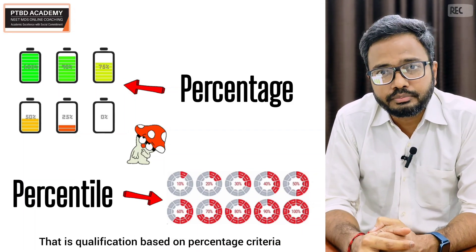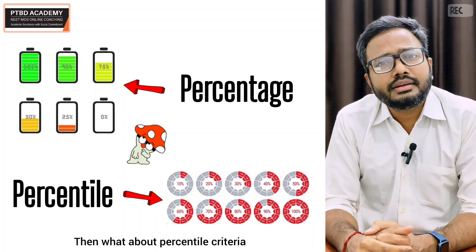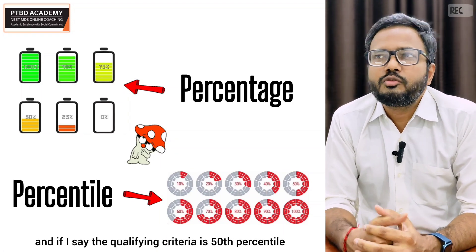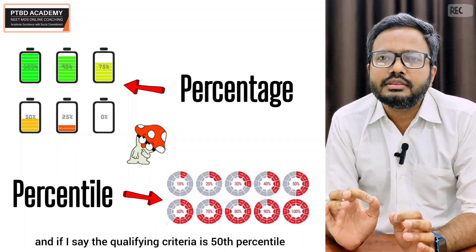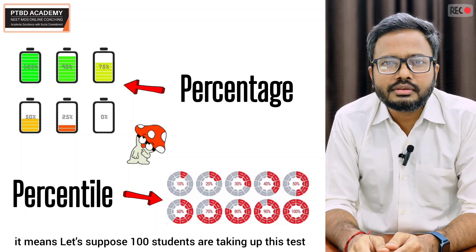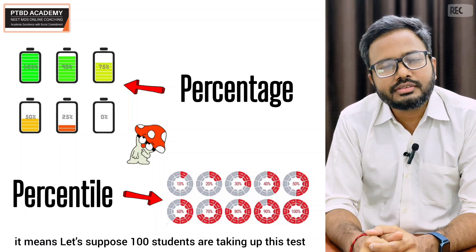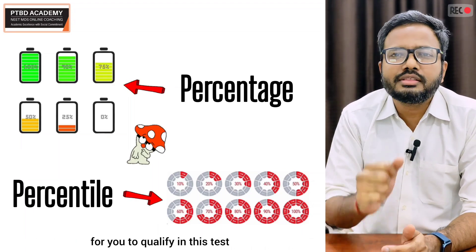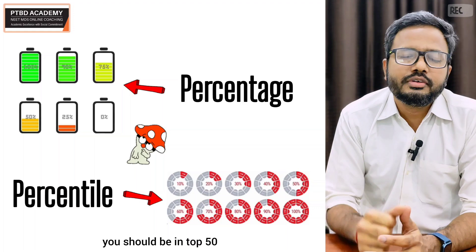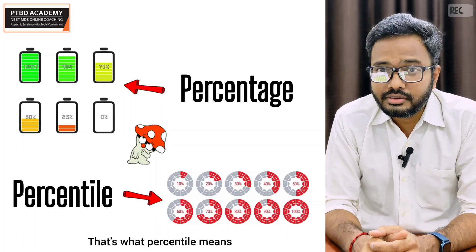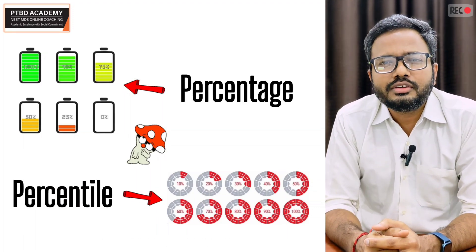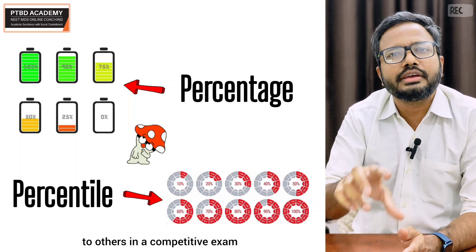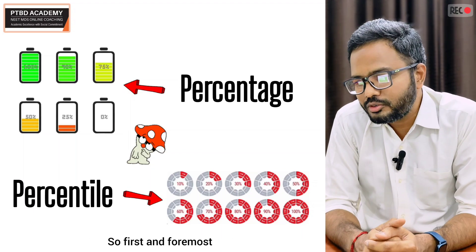Now what about percentile criteria? Let's suppose I'm conducting another test and the qualifying criteria is the 50th percentile. This means if 100 students are taking the test, for you to qualify you should be in the top 50. That's what percentile means. In simple terms, percentile tells you your position relative to others in a completed exam.